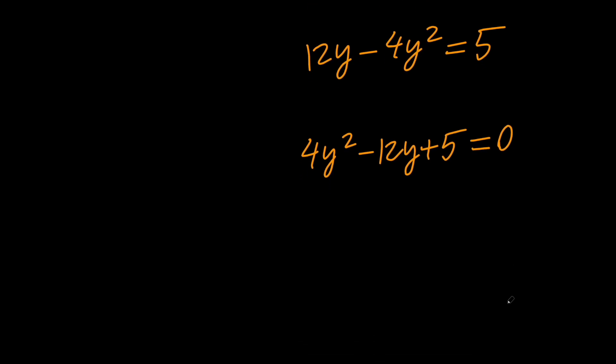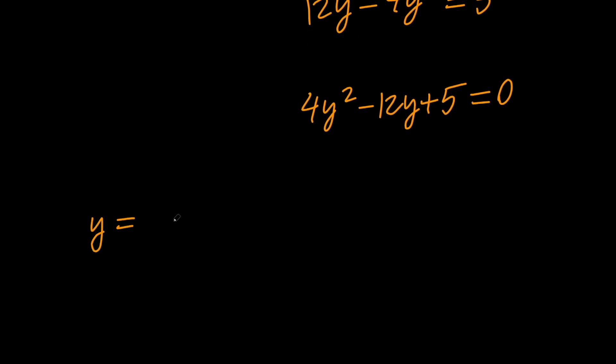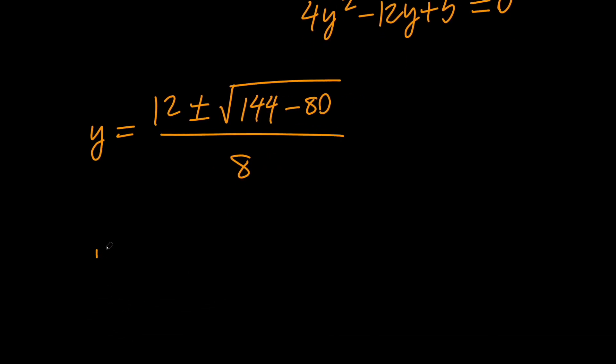So based on the quadratic formula, we can say that y is equal to 12 plus or minus the square root of 144 minus 80, all divided by 8, which means that y is equal to 12 plus or minus 8 over 8.